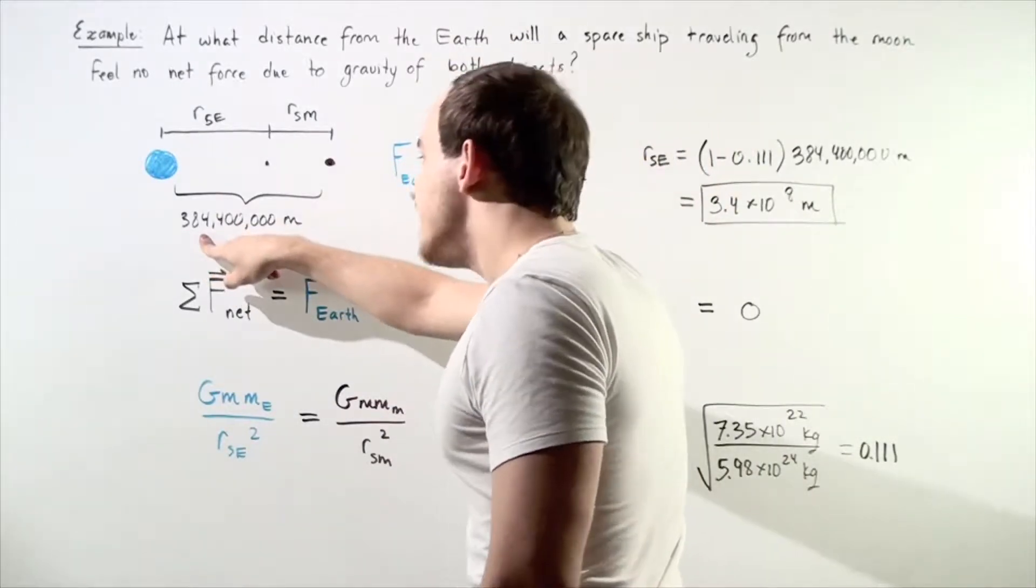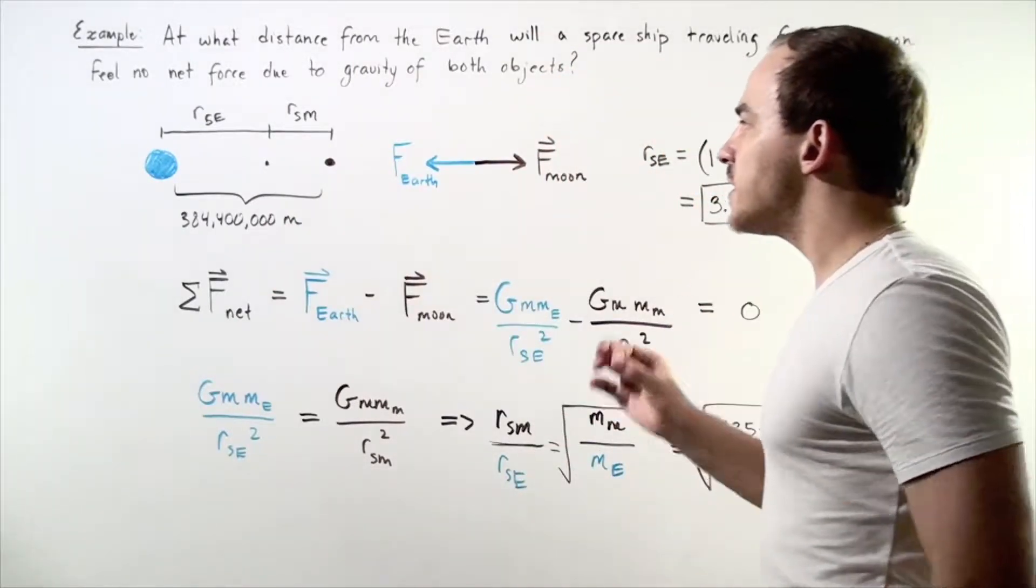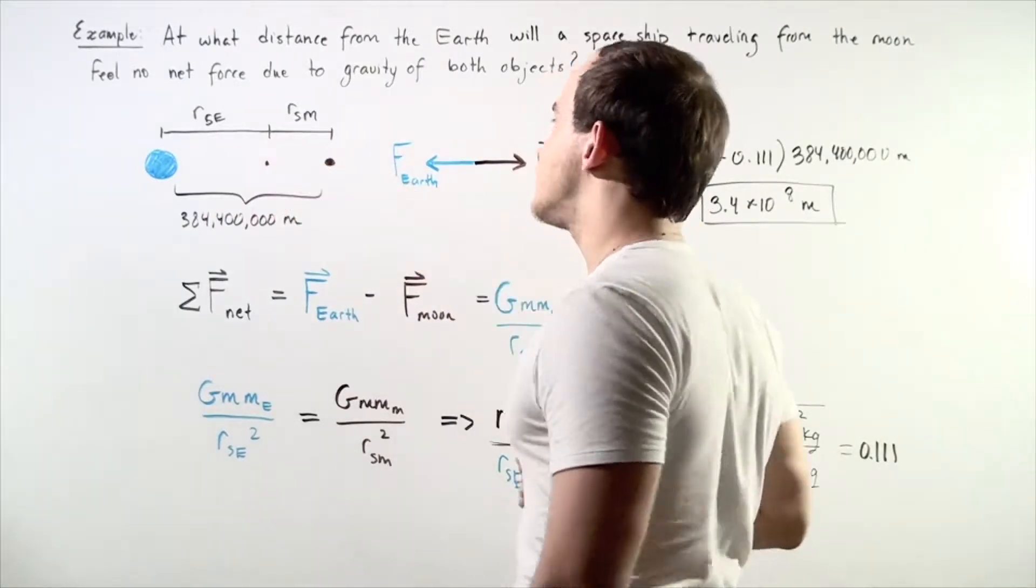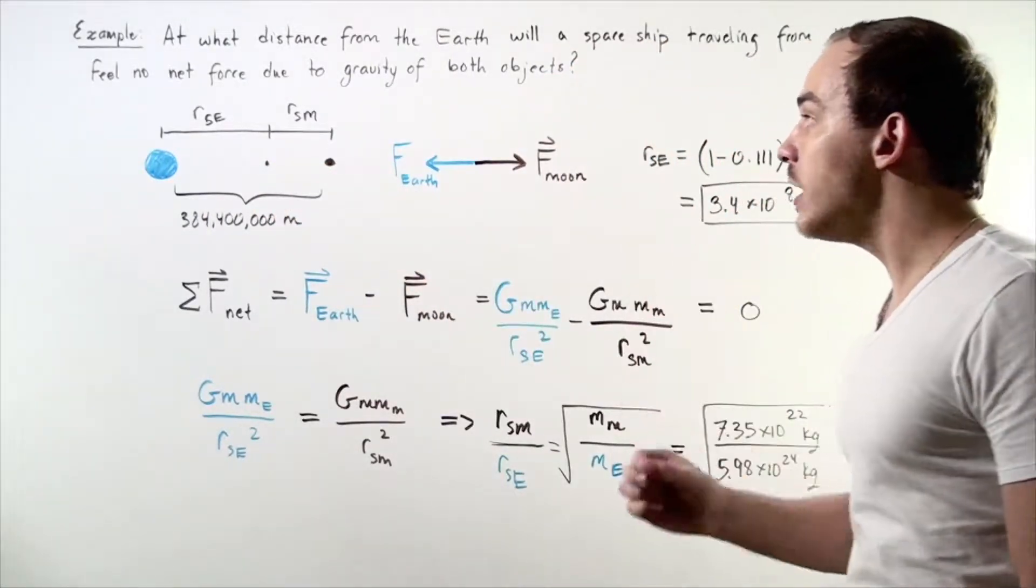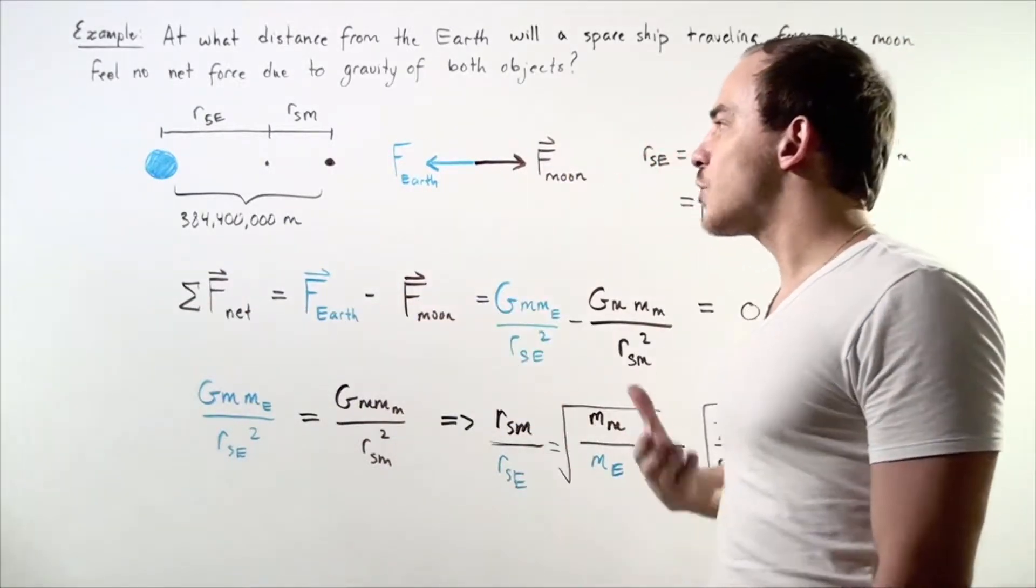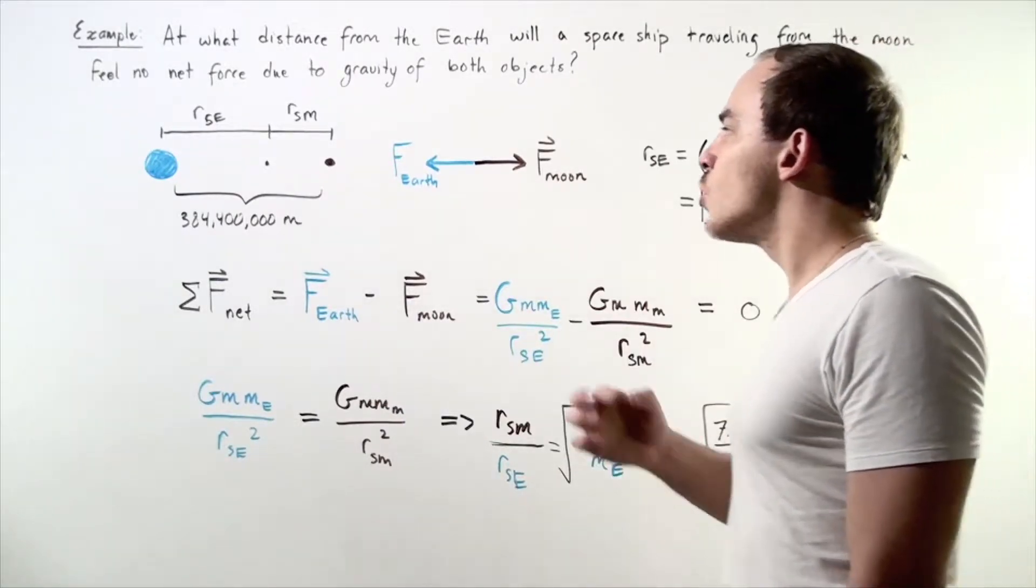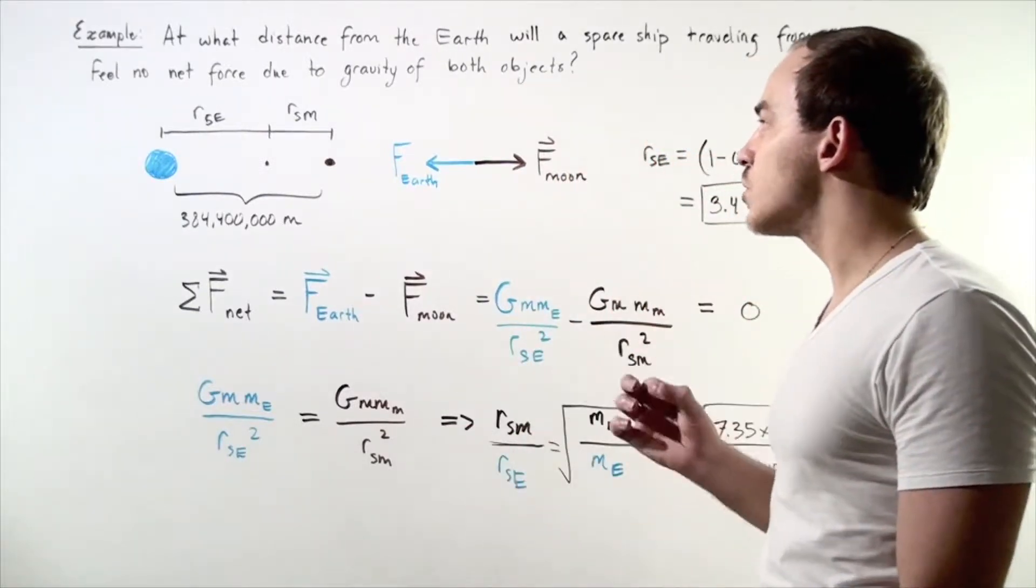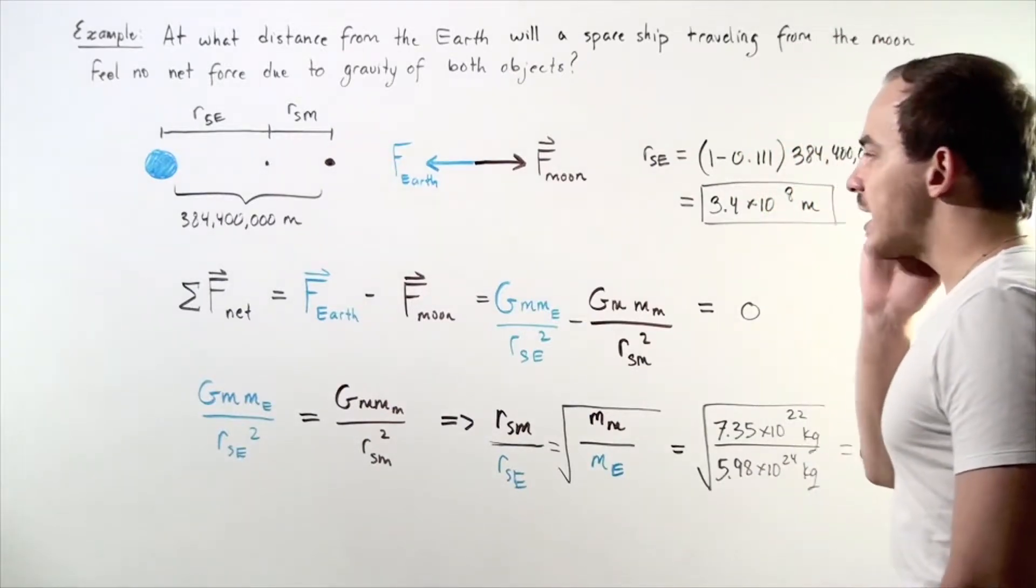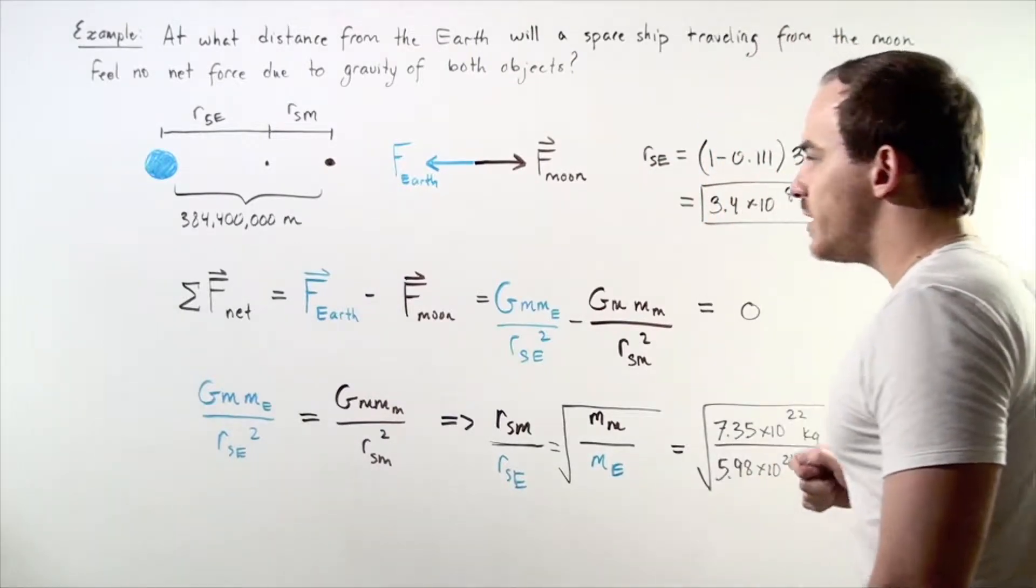It's 384,400,000 meters. Let's figure out what the forces are on our spacecraft. We have one force acting that points in the direction of the Earth, and that's the gravitational pull of the Earth on our spacecraft. At the same time, we also have the second gravitational force due to the Moon pulling on the spacecraft in the opposite direction. Let's choose going this way to be positive, and going this way to be negative.